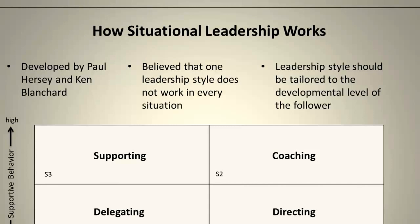Ken Blanchard is a name you're probably familiar with. He is the author of The One Minute Manager, one of the most notable management how-to books of all time. What they tried to determine is that in every situation, there isn't one particular leadership style that is best. Rarely is one style conducive to every single situation. Not only are the situations different, but the people you manage have different levels of competence, different skill sets, and different confidence levels. Because of that, they may require a different leadership style to perform at an optimal level.